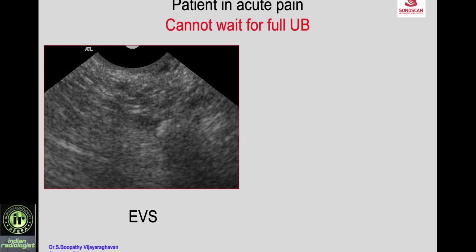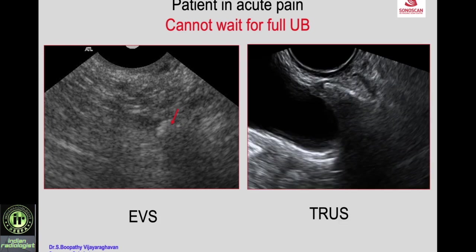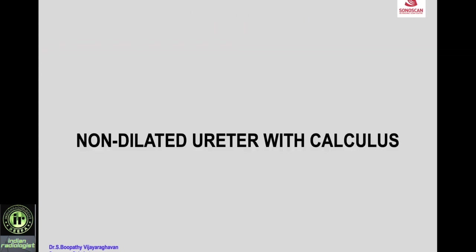If the calculus is not seen by abdominal scan, you can try endovaginal scan — you will see the distal ureter and the calculus in it. In men, you can try transrectal ultrasound: you see the bladder, the distal ureter, and the calculus in the distal ureter.